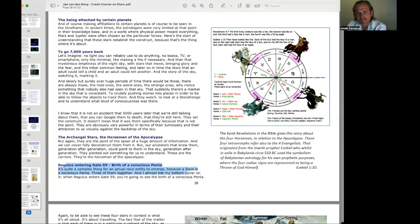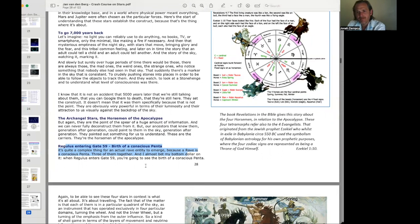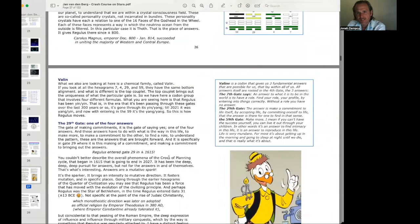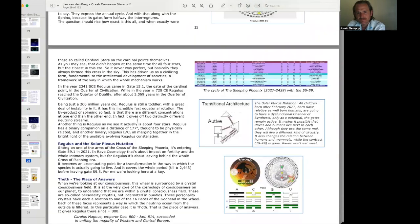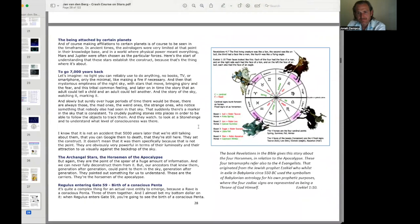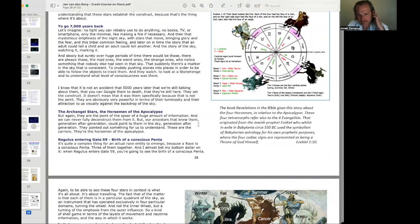Regulus entering gate 59 and the birth of a conscious penta. It's quite a complex thing for an actual rave entity to emerge, because a rave is a conscious penta. Three of them together. Jan writes, he almost bets his bottom dollar on it. When Regulus enters gate 59, you are going to see the birth of a conscious penta. That's so interesting. It entered into gate 59, line one in 2021. So that's where it is right now. So we may, after 2027, see the birth of a conscious penta.